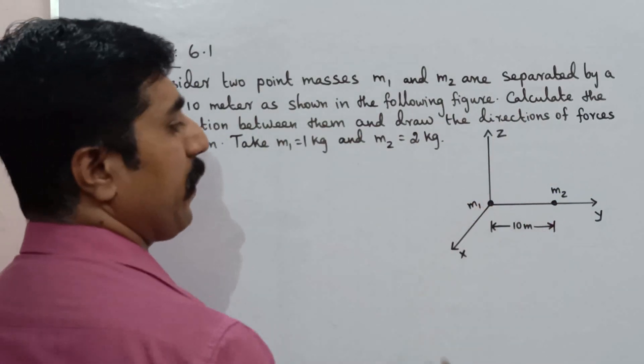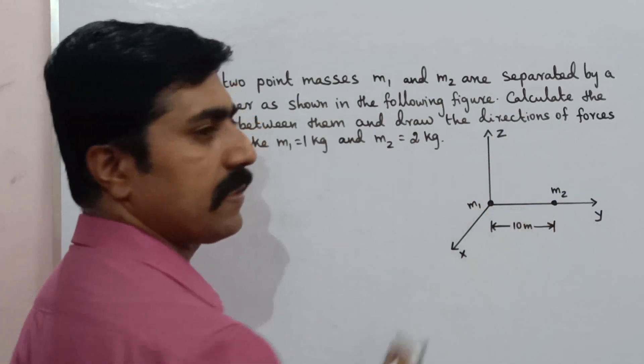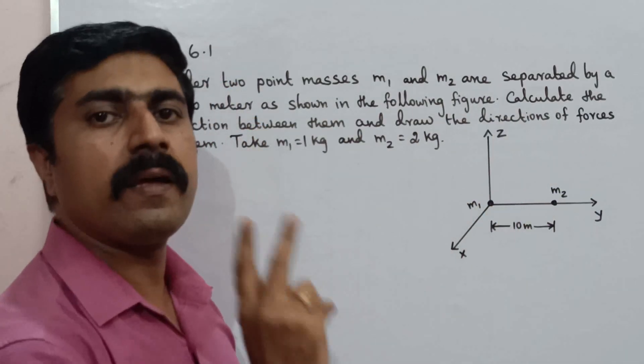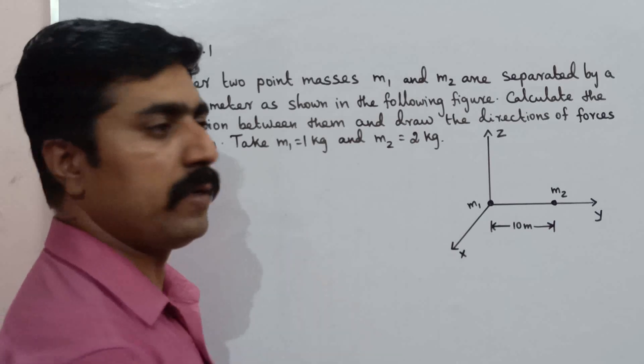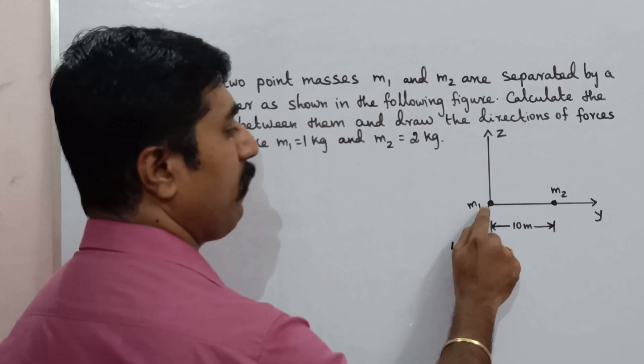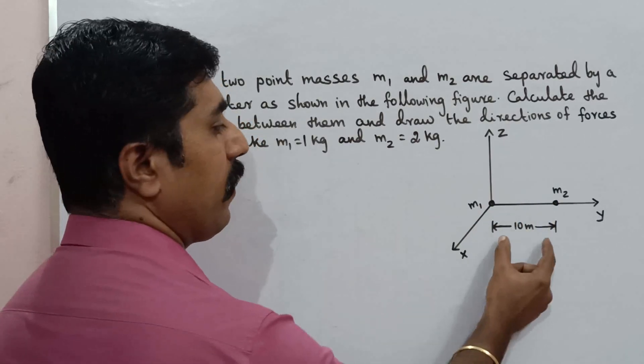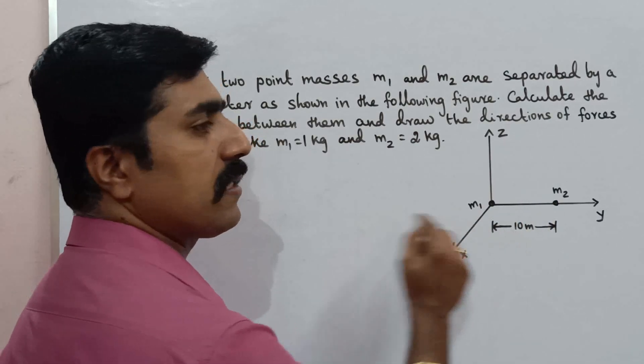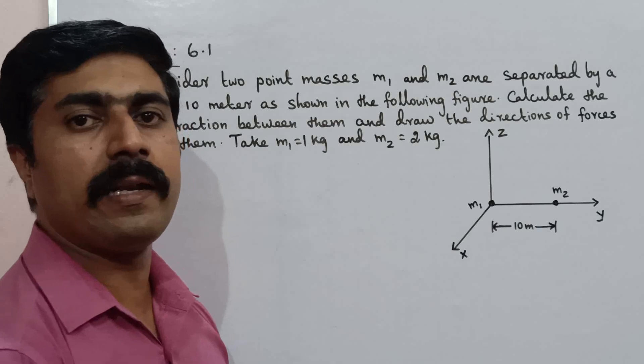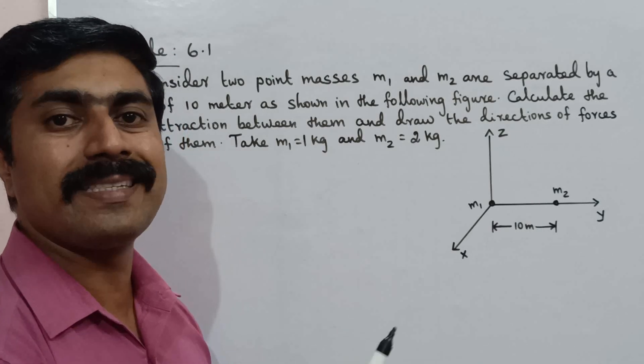Let's look at the y-axis. There are two point masses: M1 and M2, placed along the y-axis.